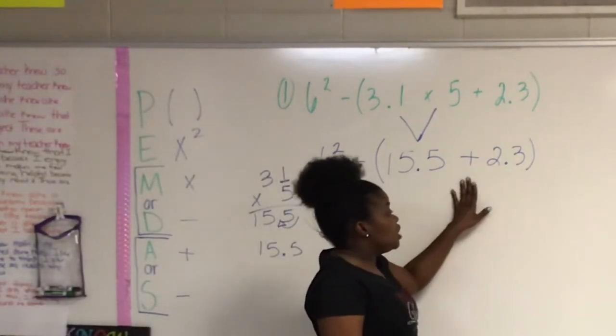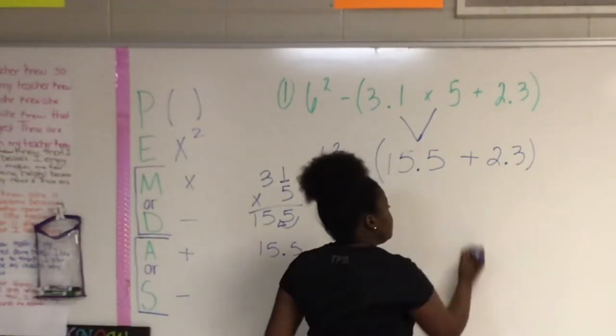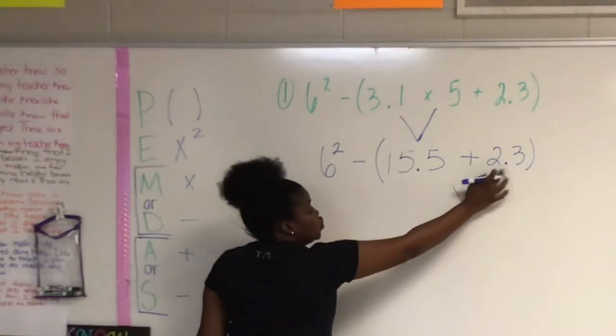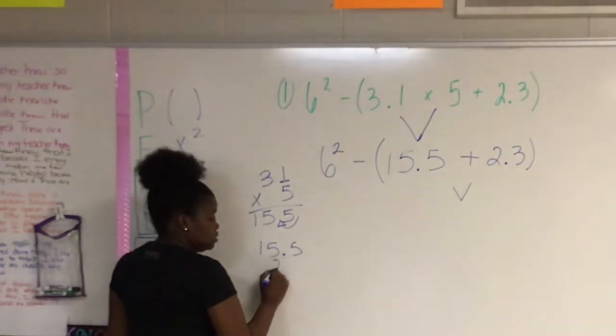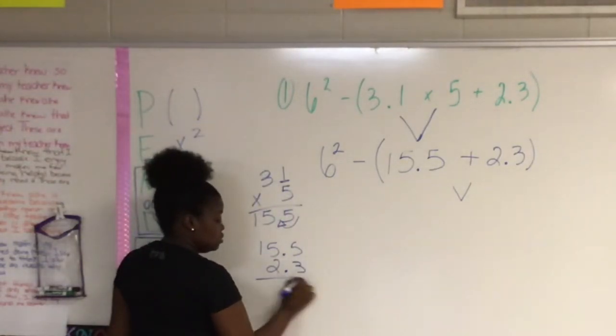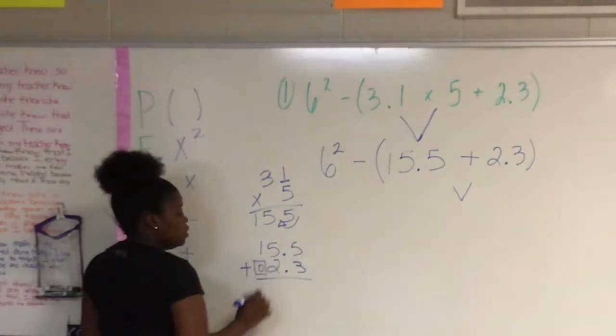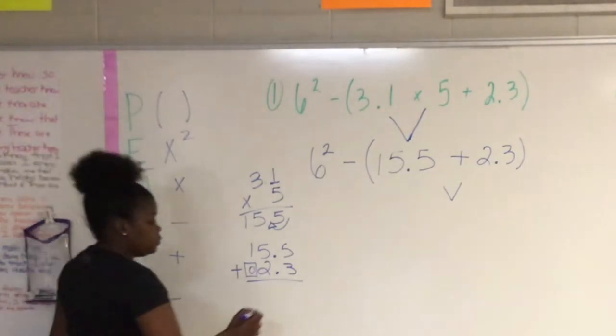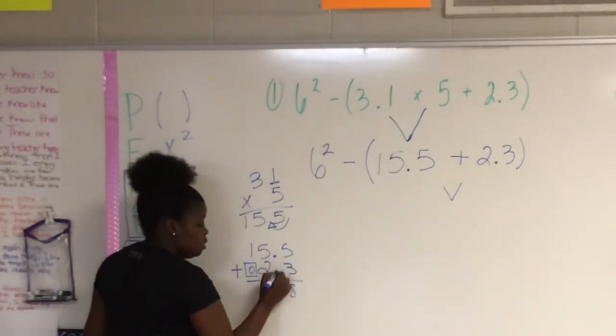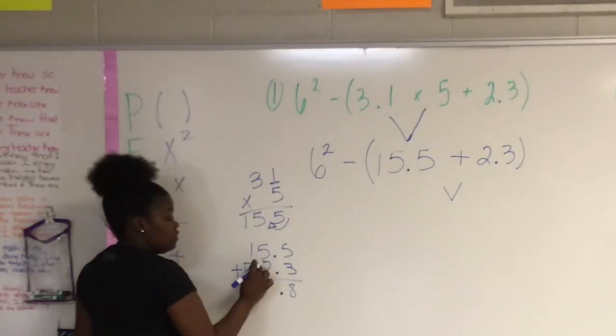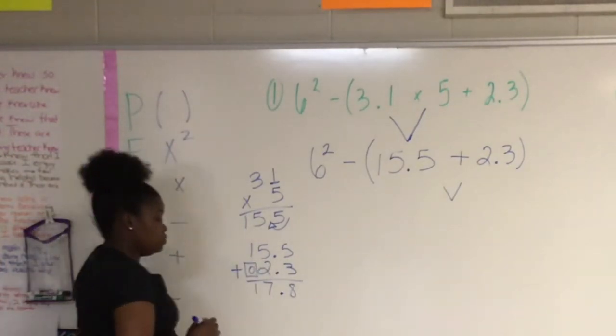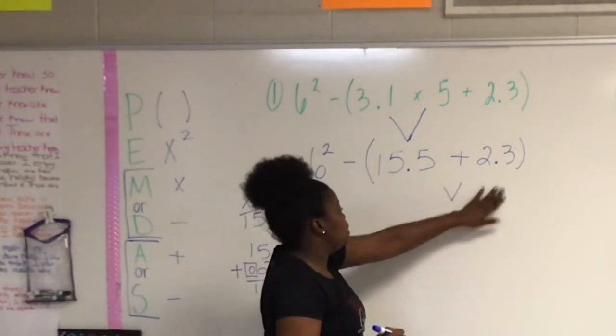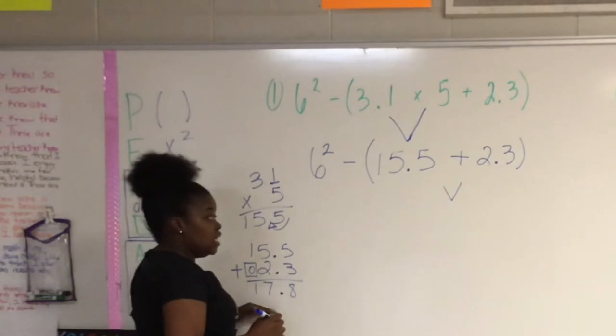15 and 5 tenths plus 2 and 3 tenths. I'm going to my scratch work and adding 2 and 3 tenths to my 15 and 5 tenths. I'm adding a placeholder here because there is nothing to go with this one. 5 plus 3 is 8. Bring down my decimal. 5 plus 2 is 7. 1 plus 0 is 1. So 15 and 5 tenths plus 2 and 3 tenths equals 17 and 8 tenths.